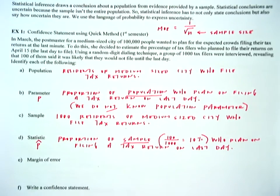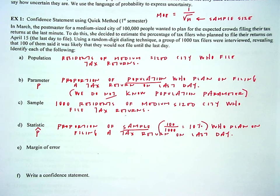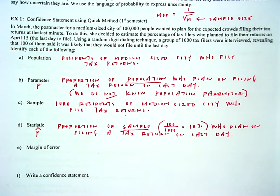Let me pause and make sure we are super clear. Population is the whole group we want information from. Our parameter is the number that describes it — the proportion of the population who will file on that very last day. We do not know the population parameter; we're always trying to predict and estimate it based on information from a known sample. Our sample is a subgroup of that larger population, hopefully representative and selected at random. Our statistic represents the sample — in this context, the proportion who are going to file on the last day, which is 10%.